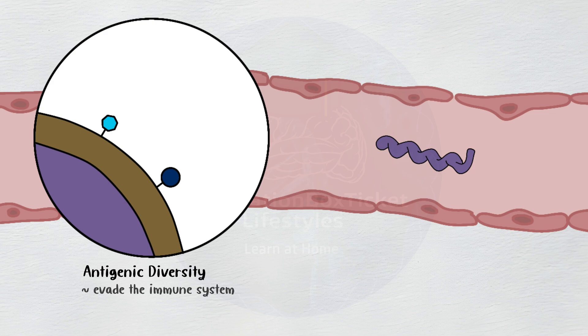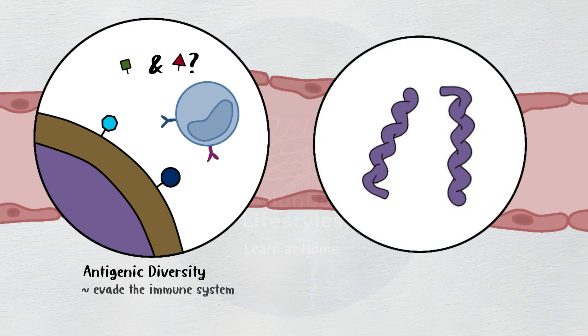Therefore, they have already transformed by the time the immune system produces antibodies against VSP or VLP, allowing Borrelia to evade immune identification. Borrelia uses binary fission to multiply in the blood after it is protected from immunological destruction. This indicates that the bacteria divides into two identical copies — yes, it is just like mitosis.